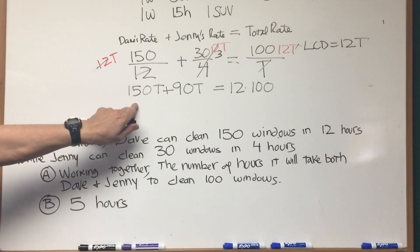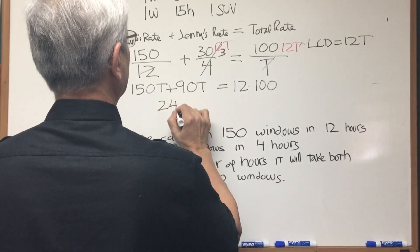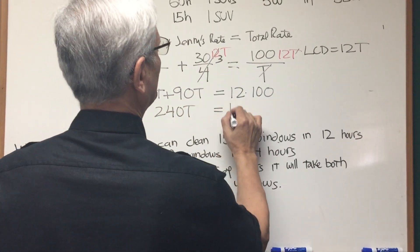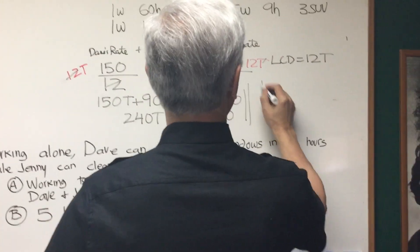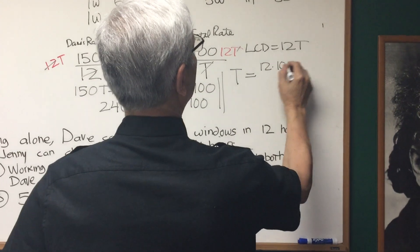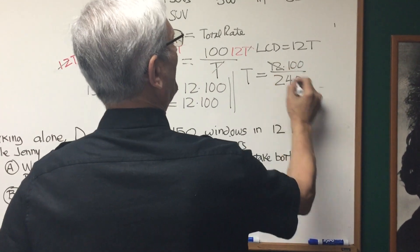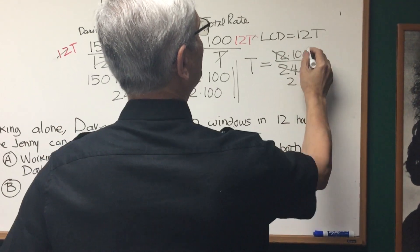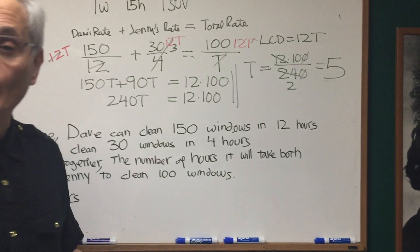All right, so 150 plus 90 is equal to 240, right? 240T equals 12 times 100. And therefore, T is equal to 12 times 100 divided by 240. So let's see, 12 goes into 24 twice, the zeros cancel over. 10 divided by 2, T is equal to 5 hours.